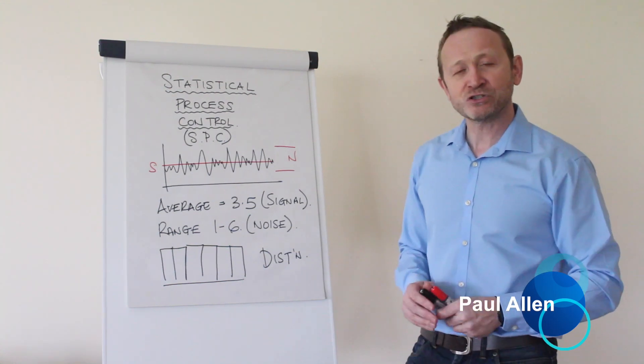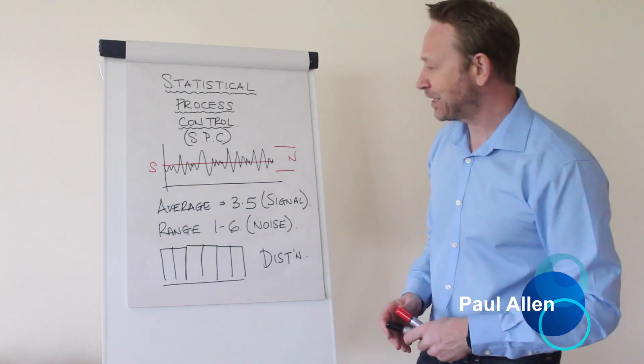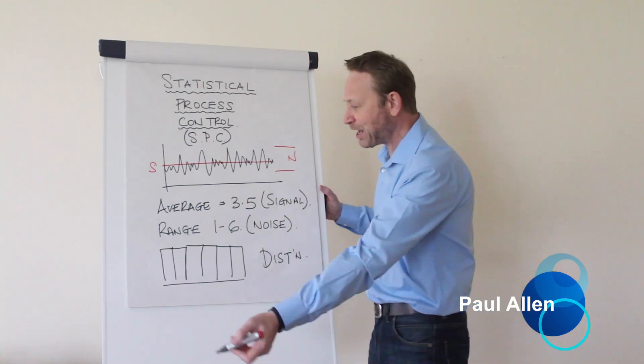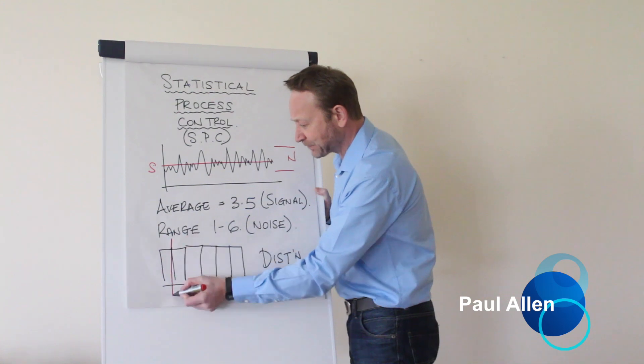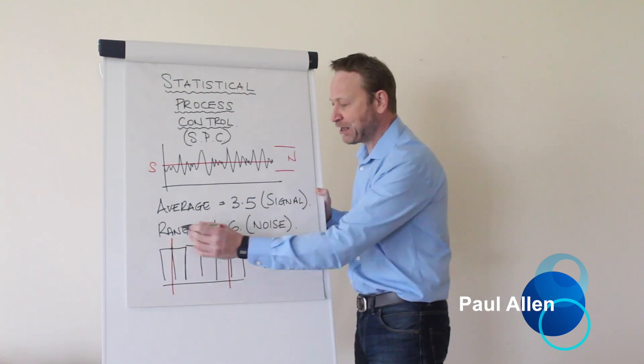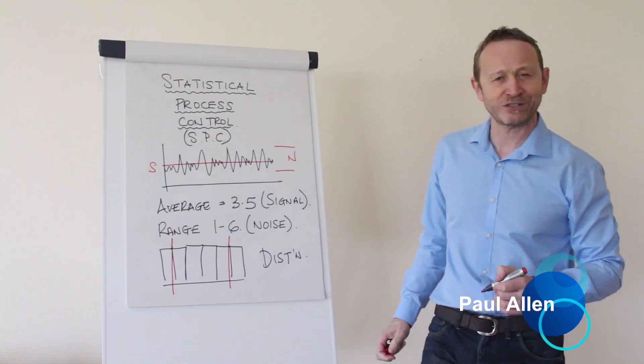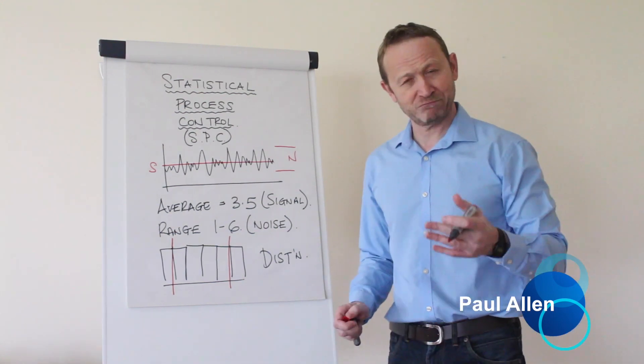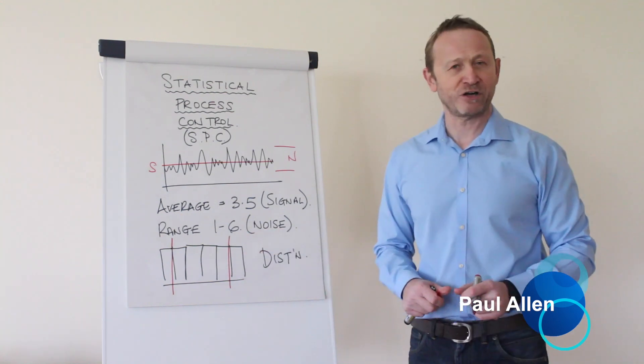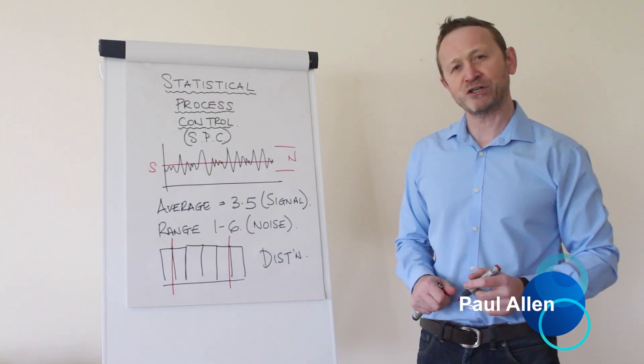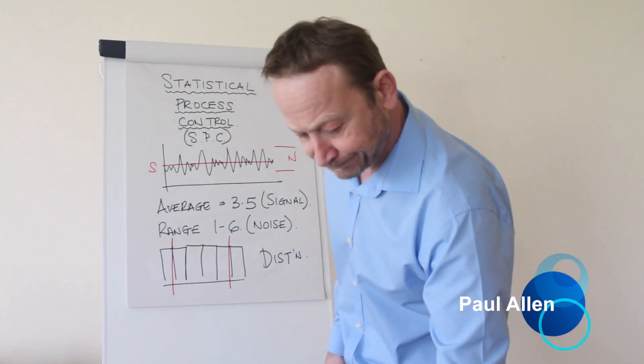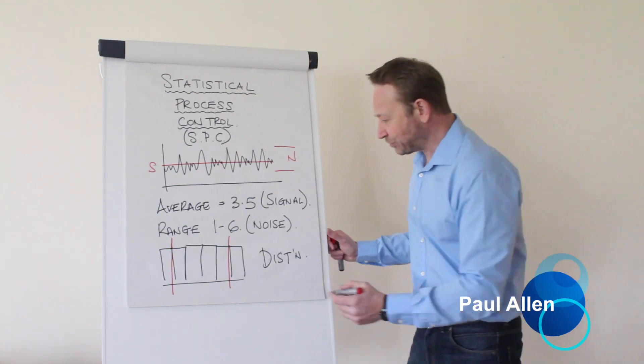And what you must avoid at all costs when you're doing this, is using specifications to do this. Because look, what would happen if we use a spec? Let's say that I have a customer that tells me I don't want 1s and 6s. Don't send them to me. They are defects. So I put the spec on my diagram now in order to try and control my process. I start running my process. And I roll a 6.